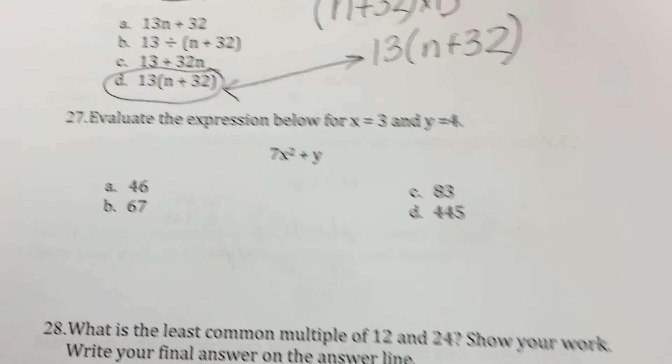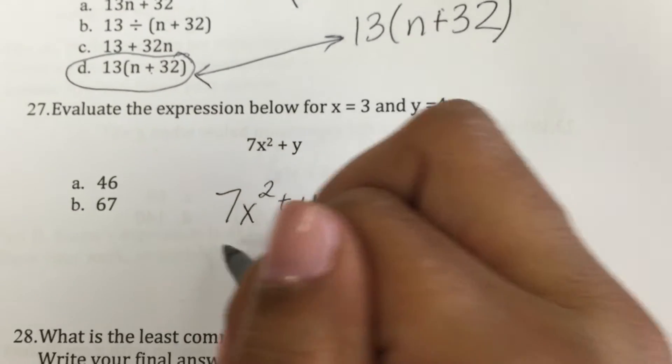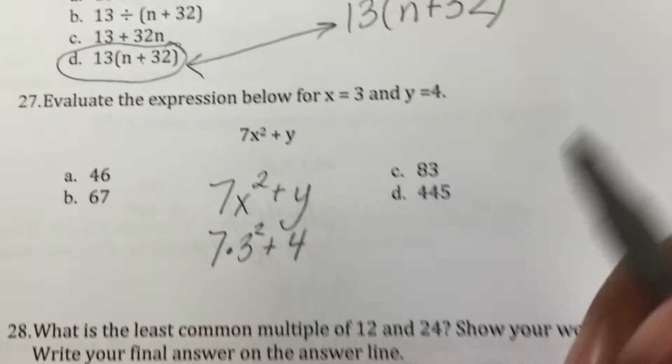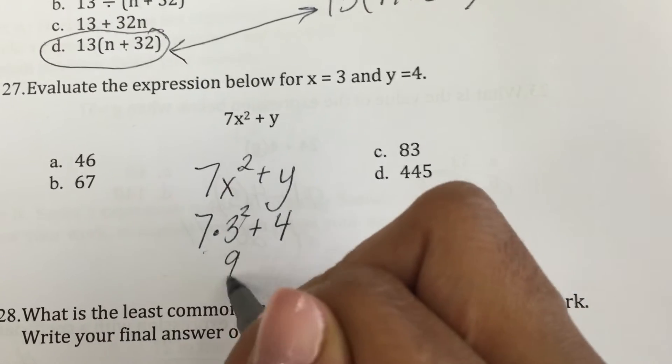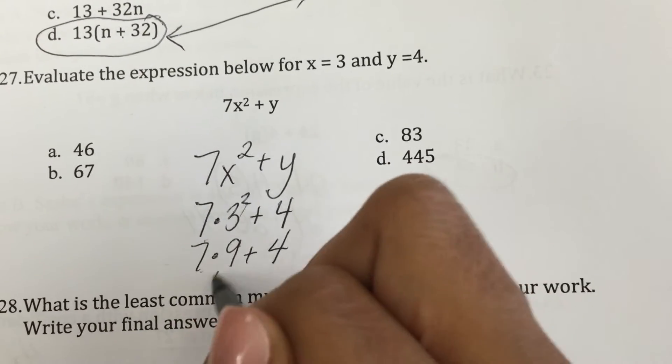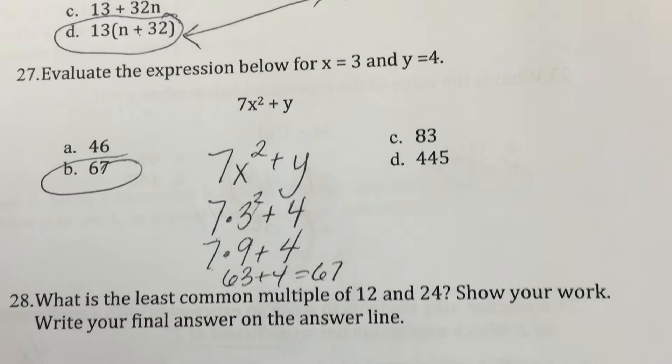Let's look at the next one. 7x squared plus y. My x is equal to 3. 7 times 3 squared plus 4. Okay. Before I multiply, I have to do this. 3 times 3 is 9. 7 times 9 plus 4. 7 times 9 is 63. Plus 4 is 67. Done.